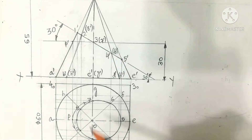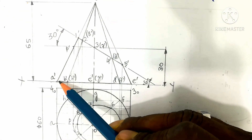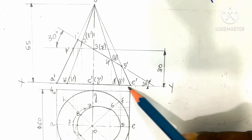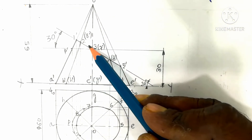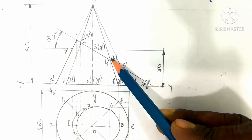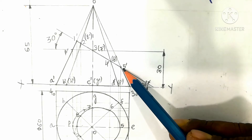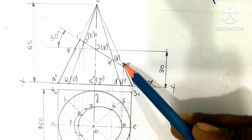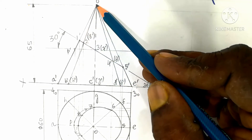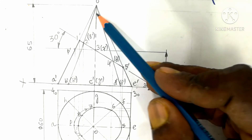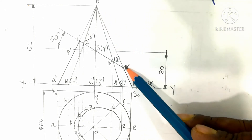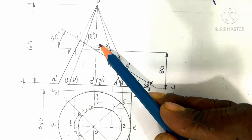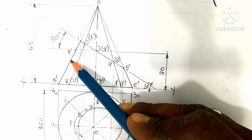This is the full cone front view. The front view will be a triangle, and this is the location of the cutting plane. The inclined line is called the cutting plane line. When the cone is cut, the cut part of the cone is removed — specifically, the apex part of this cone is removed. The base portion is retained as the solid.